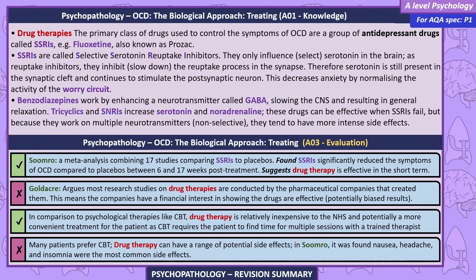Evaluations. Samarro's meta-analysis combining 17 studies comparing SSRIs to placebo found SSRIs significantly reduce symptoms of OCD compared to placebos between 6 and 17 weeks post-treatment, suggesting drug therapy is effective in the short term. However, Goldacre argues most research studies on drug therapies are conducted by the pharmaceutical companies that created them, meaning companies have a financial interest in showing drugs are effective, potentially biasing results. Compared to psychological therapies like CBT, drug therapy is relatively inexpensive to the NHS and potentially more convenient for patients, as CBT requires multiple sessions with a trained therapist — though many patients prefer CBT. Drug therapy can also have side effects; in Samarro, nausea, headache, and insomnia were the most common.